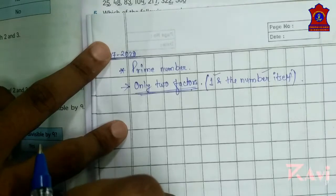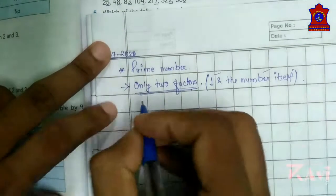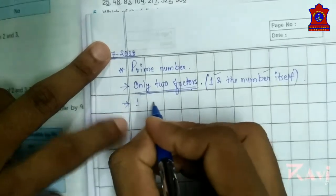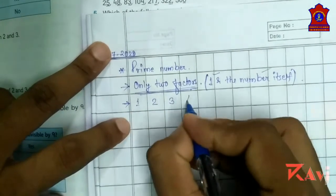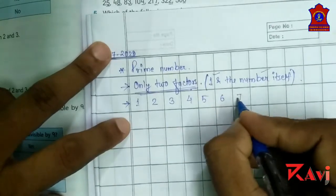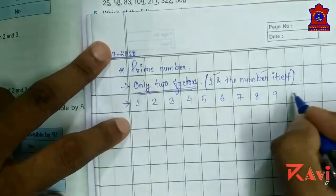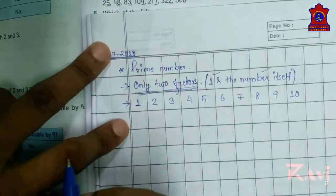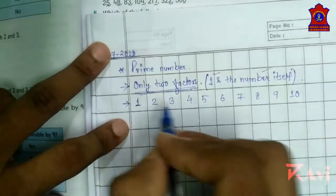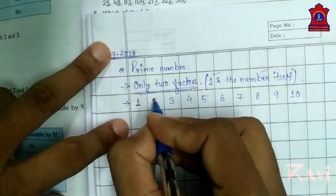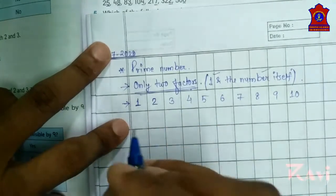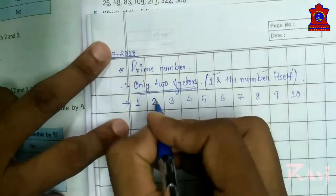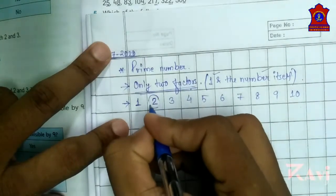If somebody is asking what are the prime numbers between 1 to 10, let's write 1, 2, 3, 4, 5, 6, 7, 8, 9, 10. Here, 1 is neither prime nor composite — so leave it. 2 is a prime number because 2 has only two factors; it is divisible by only 1 and 2.